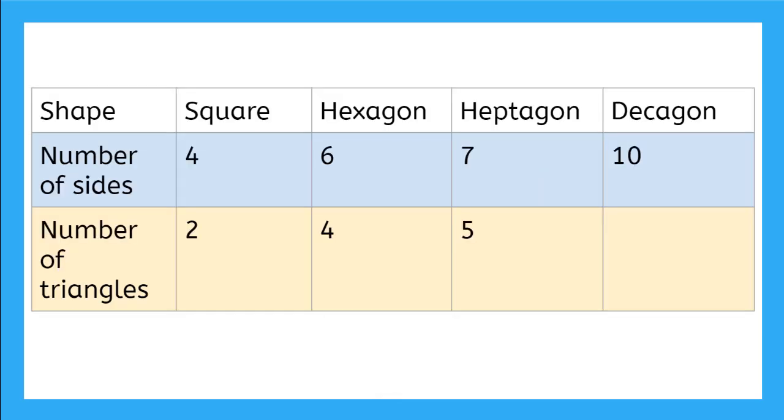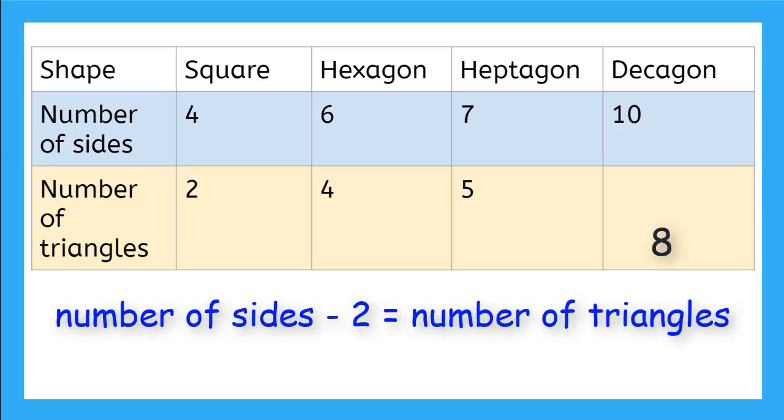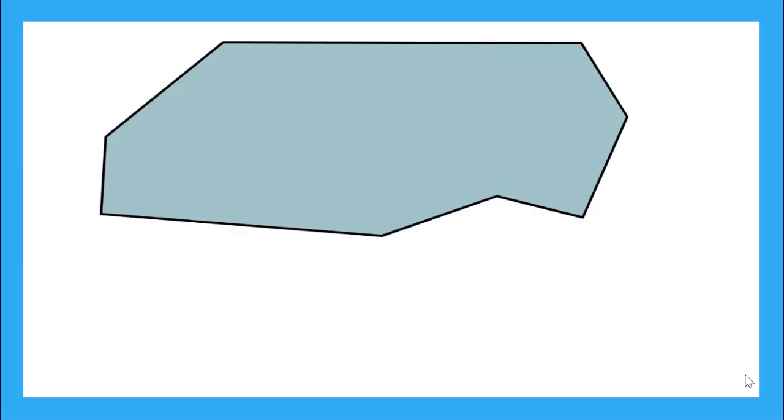Based on our pattern, how many triangles would fit in a decagon? That's right. Eight triangles would fit inside a ten-sided shape. We can write a formula to help us. We will say the number of sides minus two equals the number of triangles, and we can call the number of sides x.